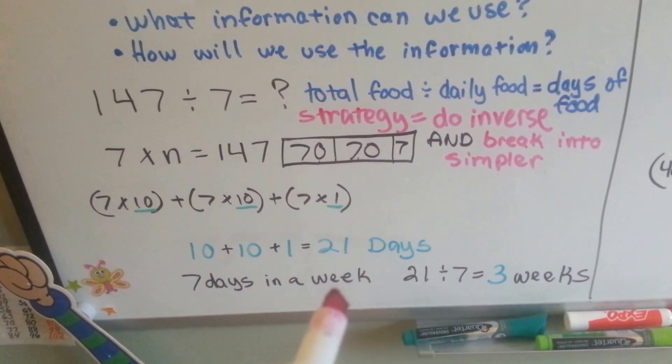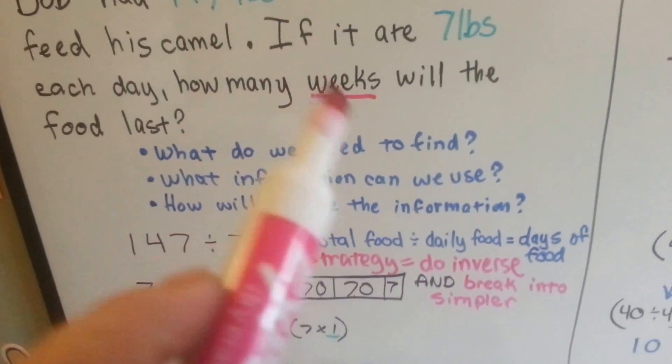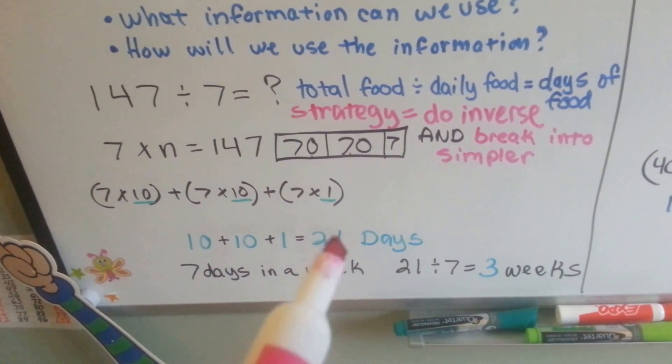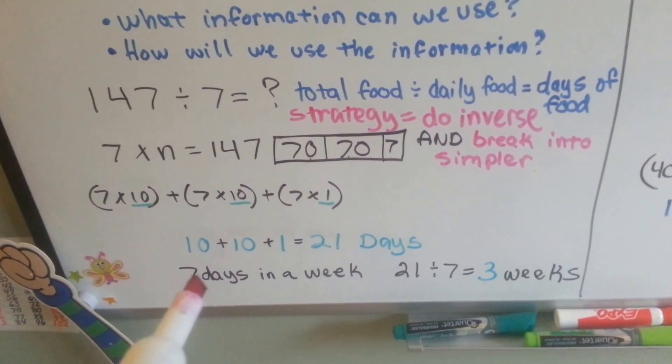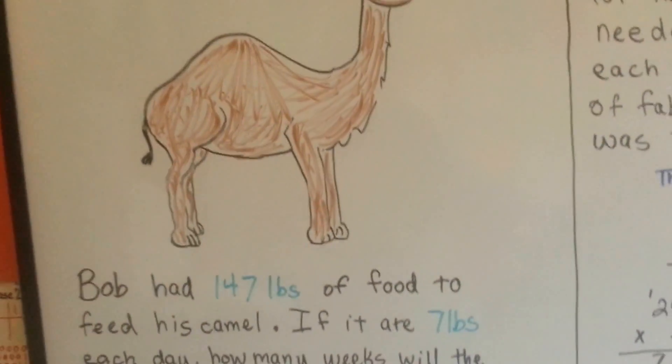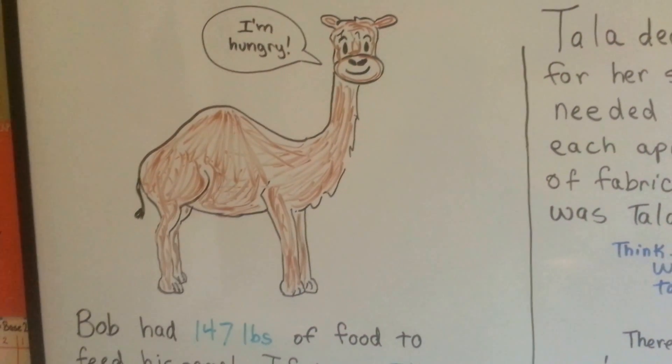Well, I know there's 7 days in a week, and we need to know how many weeks the food will last. So I divided the 21 days into the 7 days of a week and got 3 weeks. So now Bob can feed his camel for 3 weeks without worrying.